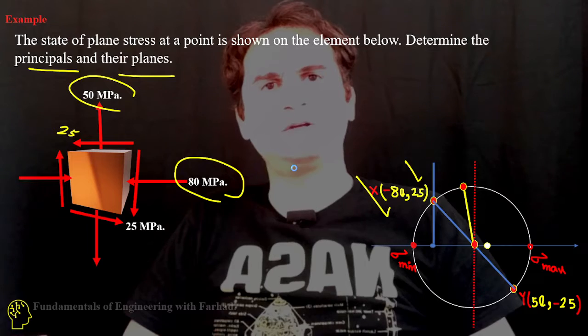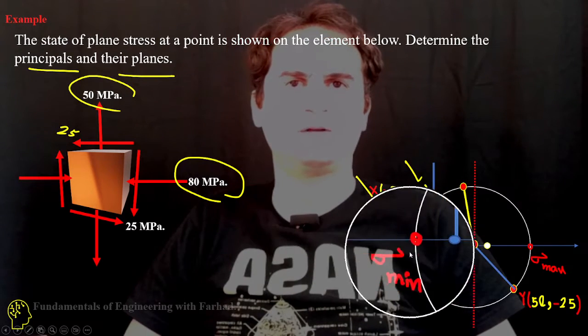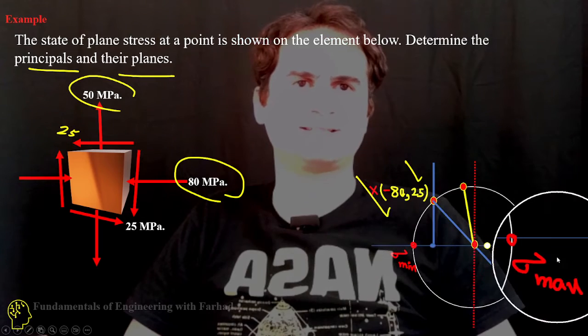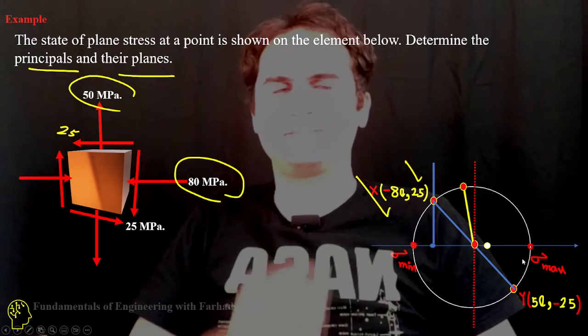By simply looking at the figure, you can easily know this is the minimum possible in normal stresses and that's the maximum possible in Mohr circle. So we call them principal stresses.